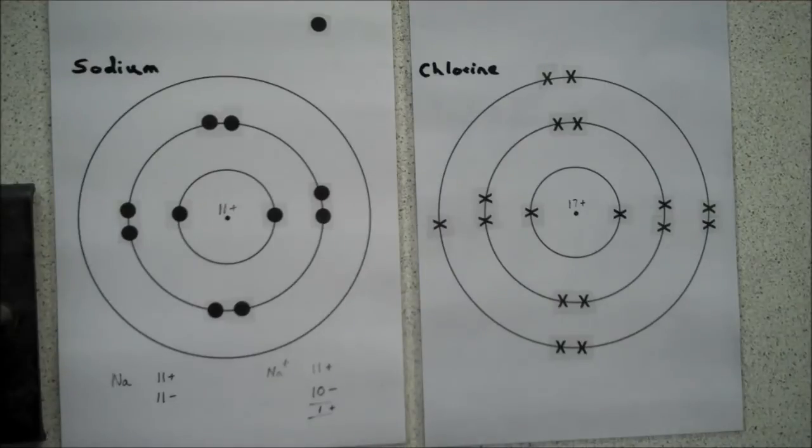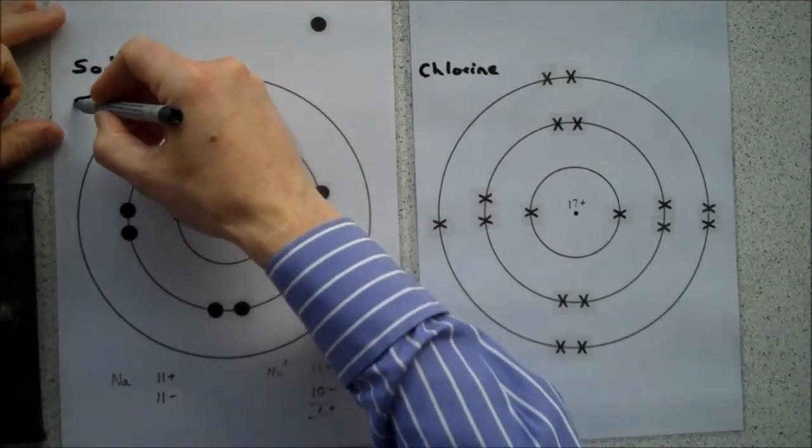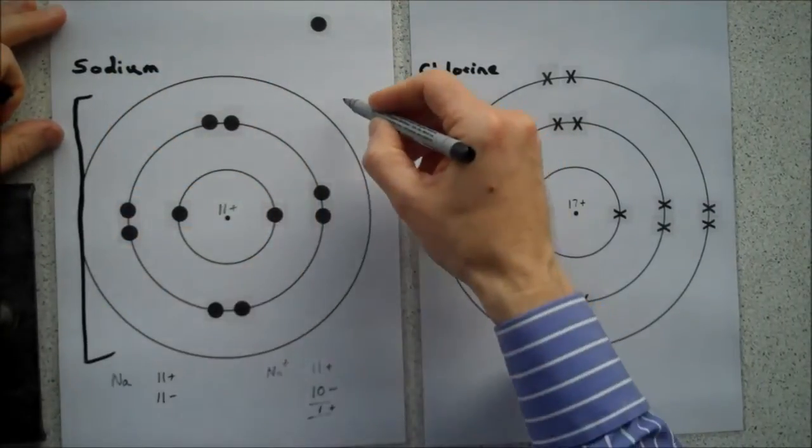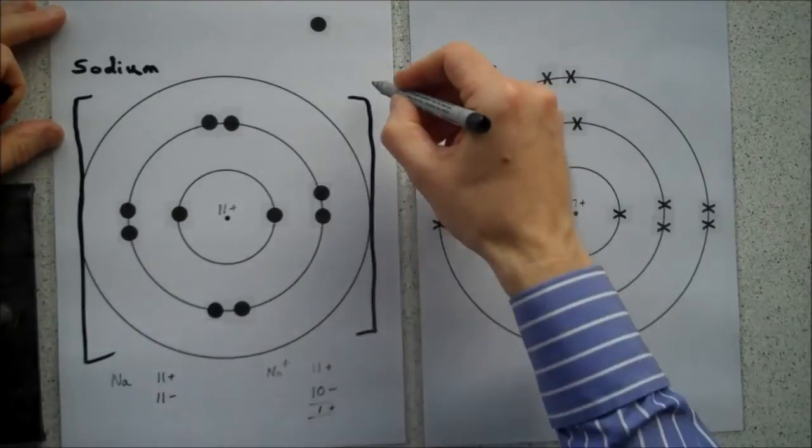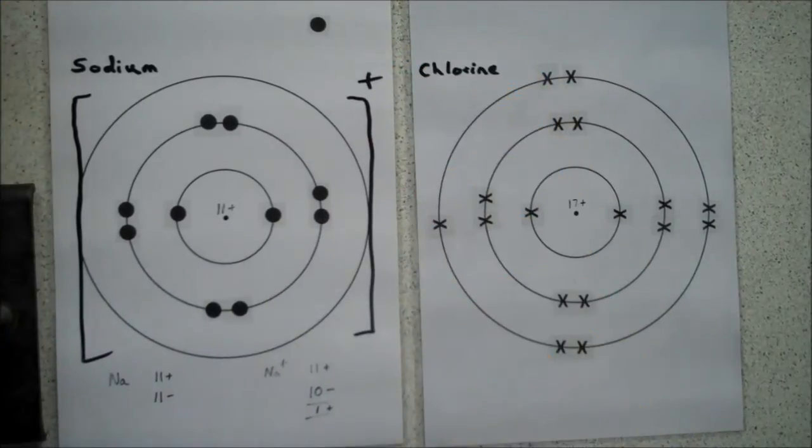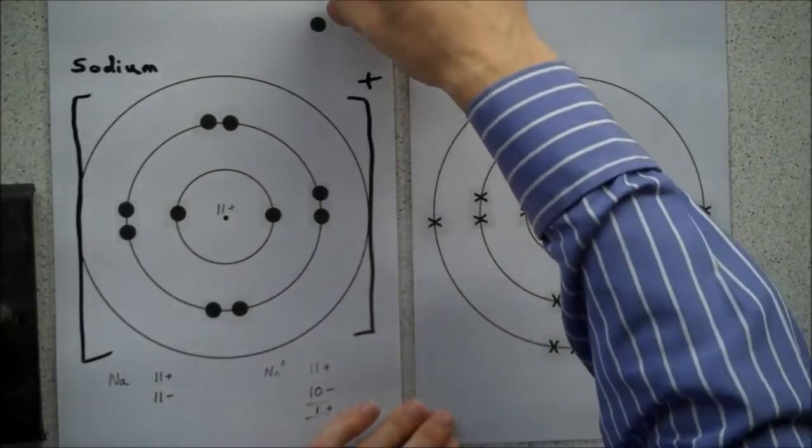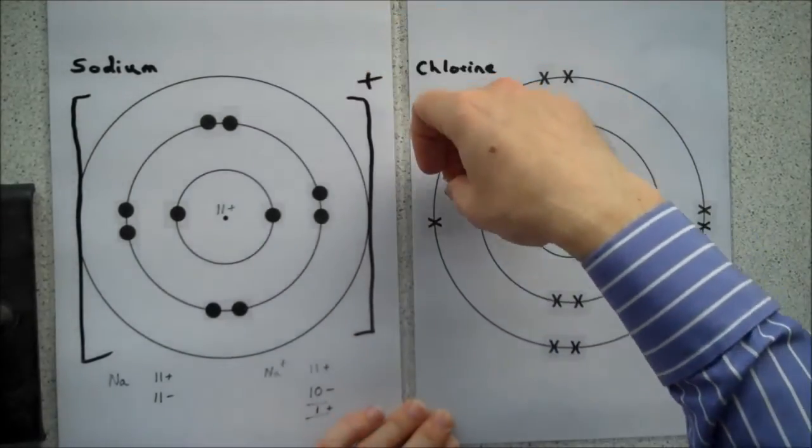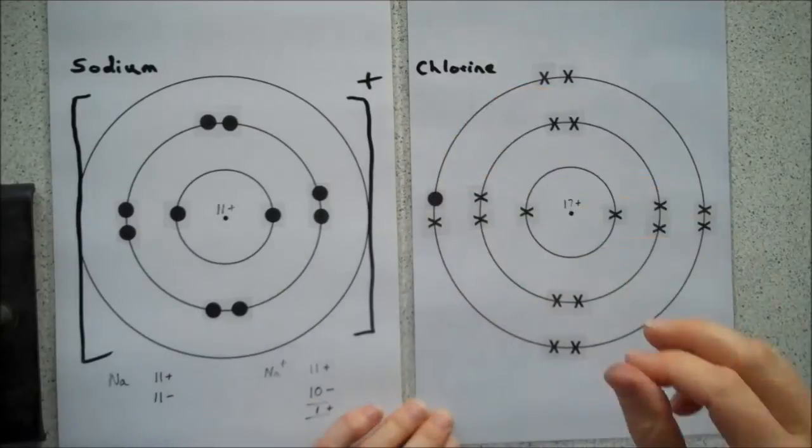So when sodium gains that charge of plus 1, we can draw square brackets around it and we'll write plus there. So what does that electron do? Well, that electron is going to join chlorine, and it's going to fit in the outer shell of chlorine.